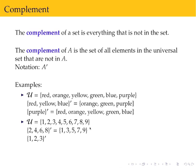The complement of 1, 2, 3 is everything that is not in 1, 2, 3, which would be 4, 5, 6, 7, 8, 9.